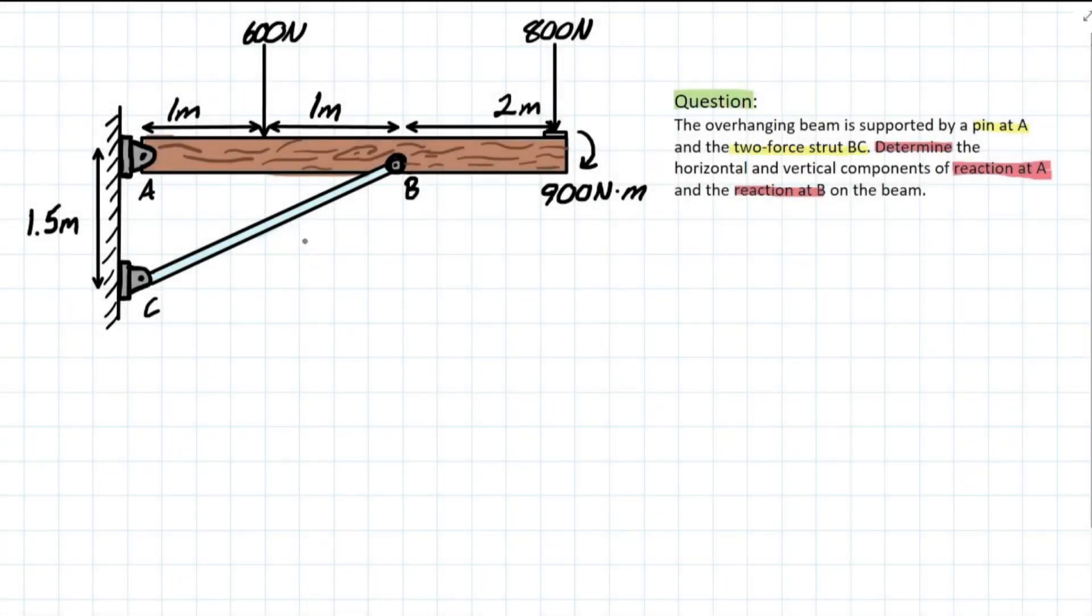Hello everybody, let's try to solve this rigid body problem. If you need a review on what rigid bodies are, I suggest you check out the first problem I did. I go in detail with an explanation for what it's about. So for this example here, we have an overhanging beam which is supported by a pin at A and a two-force strut BC. Determine the horizontal and vertical components of the reactions at A and the reactions at B on the beam.